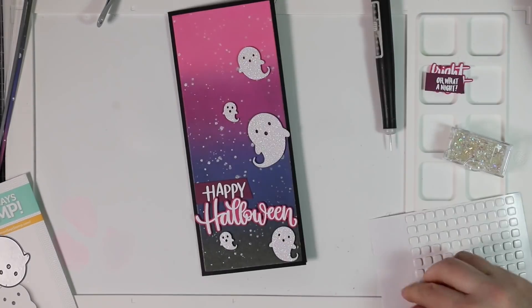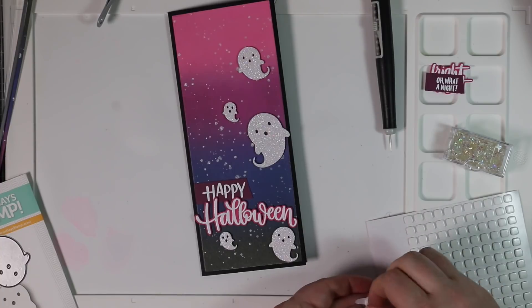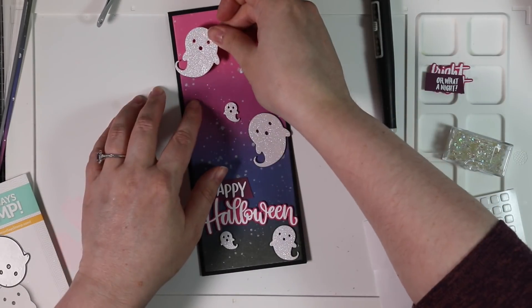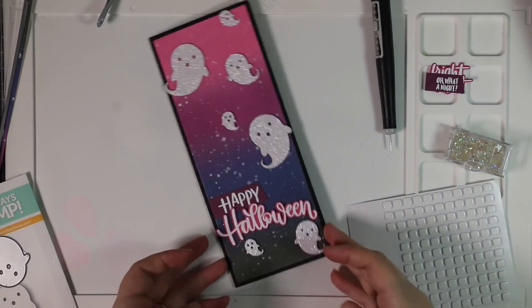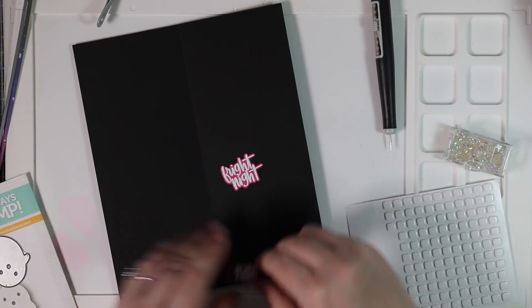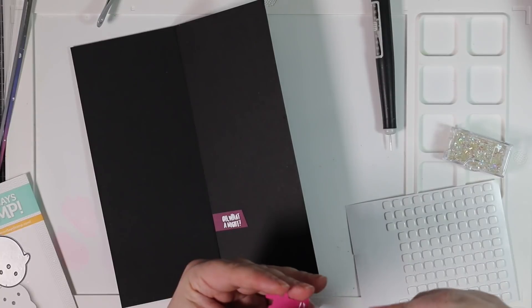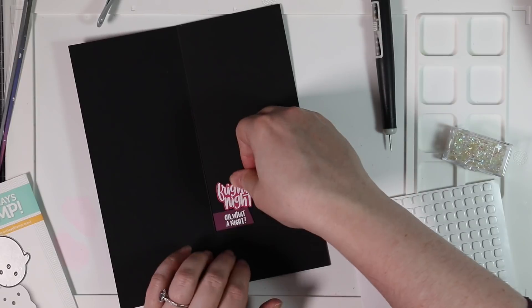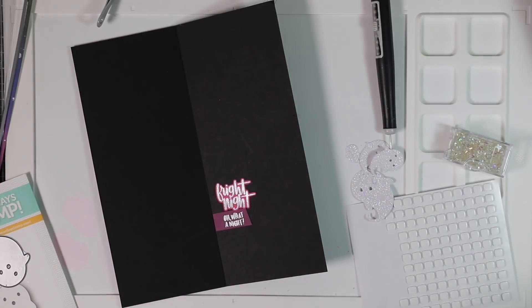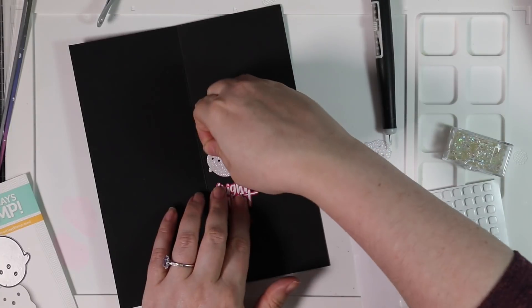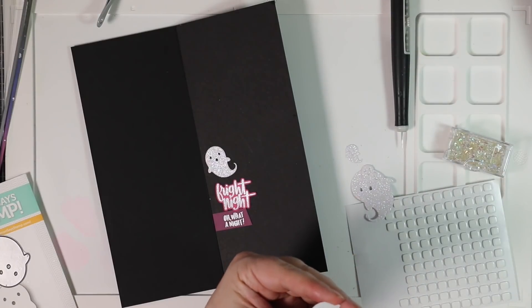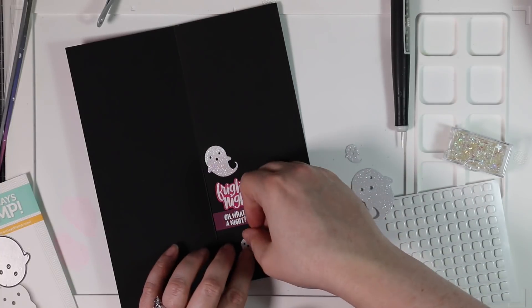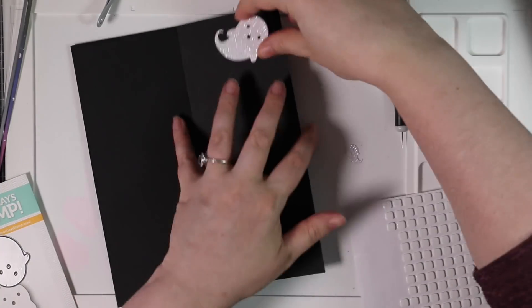And then I'd also white heat embossed a couple more sentiments from that hand-lettered Halloween set onto those same plum and pink cardstocks. The one I die cut with a coordinating wafer die and the other one I trimmed down just like I did for the sentiment on the front. I'm going to adhere those to the inside of this card base. When I have dark cardstock card bases like this, I either line the inside with a lighter cardstock like white or just a light color that coordinates, or I will just keep the card base as is with really dark cardstock. And then when I go to write to the recipient, I'll just use a gel pen or a glitter pen, anything that will show up on dark cardstock.